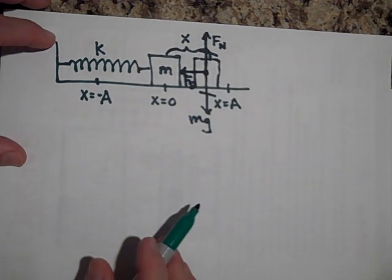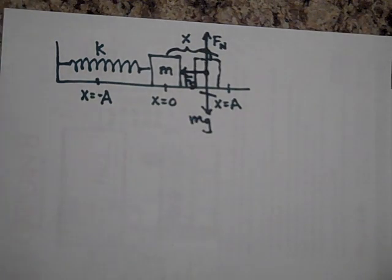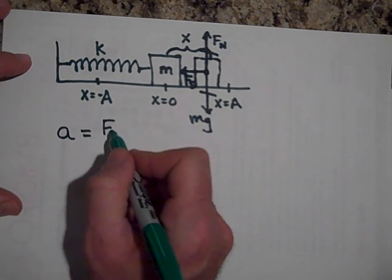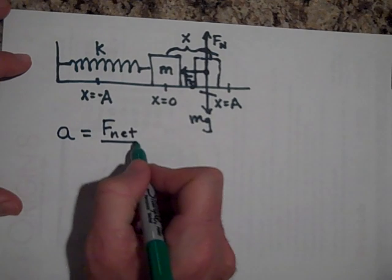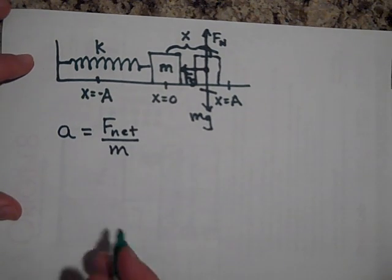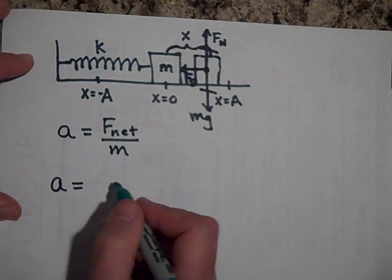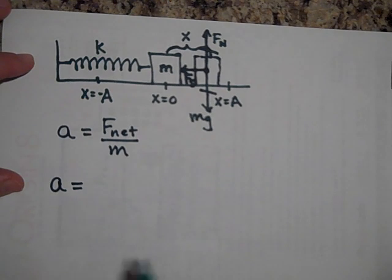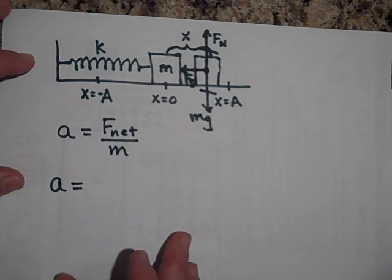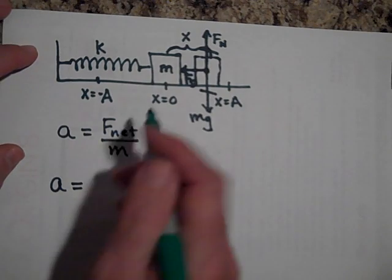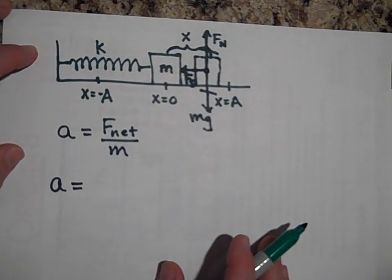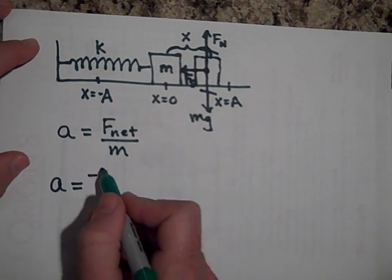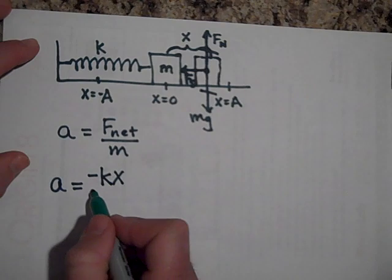And so we're just left with the net force, which will be the force of the spring. So a equals F net over m. And so a equals, now the force of the spring, Hooke's law. Now we have to get the positives and negatives right, because before we were pretty loose with whether or not Hooke's law was kx or negative kx, but now it's negative kx.